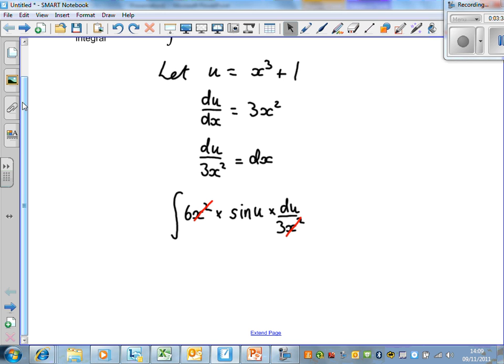The 6 and the 3 don't cancel, which is a bit annoying, but it's not a biggie, because 6 divided by 3 is 2, so we can take 2 outside of the integral. So this becomes 2 times the integral of sine u du.